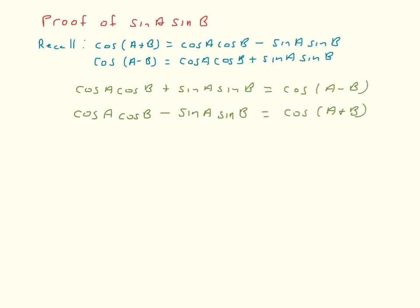The proofs of all three of these can be found in the book, but I'm just going to show you the proof of one — the proof of sine of a times sine of b. Recall from the sum and difference identities for cosine that cosine of a plus b equals cosine a cosine b minus sine a sine b, and cosine of a minus b equals cosine a cosine b plus sine a sine b. We're going to use these identities to derive sine of a times sine of b.